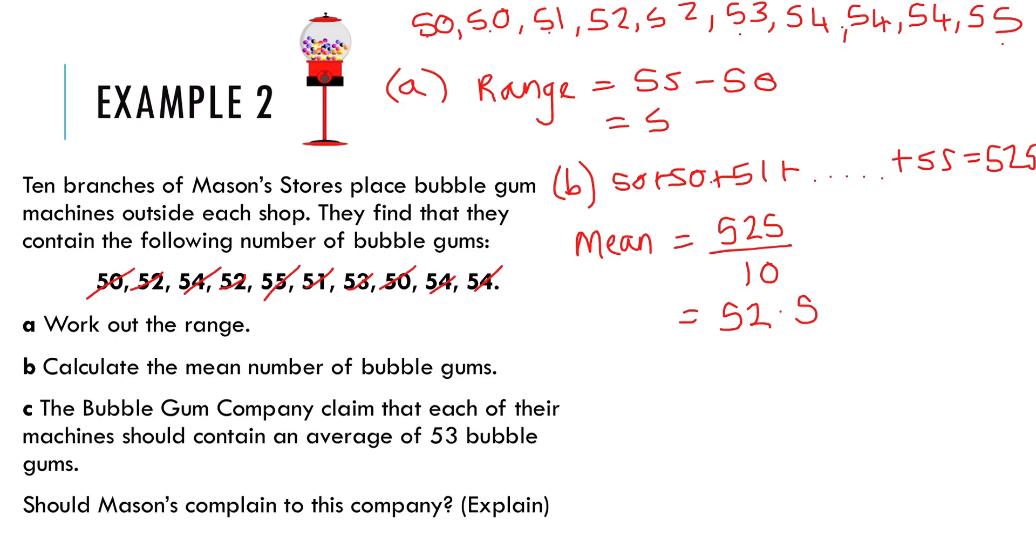Now Part C says the bubble gum company claim that each of their machines should contain an average of 53 bubble gums, should Mason's complain to this company, explain. Now although it's not exactly what they said would be in every machine, they did claim that on average, and remember, average does have some variation around it. It doesn't need to be exactly. It's only 0.5 less than what they claim. So that's not enough to complain. It's only half a sweet less than what they claim. So it is pretty close. So the answer that we're going to go for here is no. On average, each machine contains only 0.5 less than the stated average. This amount is too small to complain.